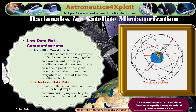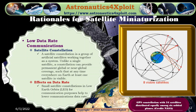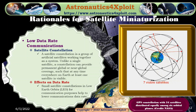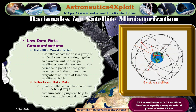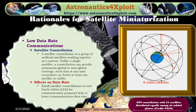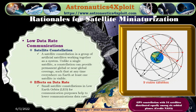Low data rate communications is another rationale for miniaturizing satellites. A satellite constellation is a group of artificial satellites working together as a system. Unlike a single satellite, a constellation can provide permanent global or near-global coverage, ensuring that at any time, everywhere on Earth, at least one satellite is visible. Small satellite constellations in low Earth orbit for communication purposes help to lower communications data rates. This picture shows a GPS constellation with 24 satellites distributed equally among six orbital planes.